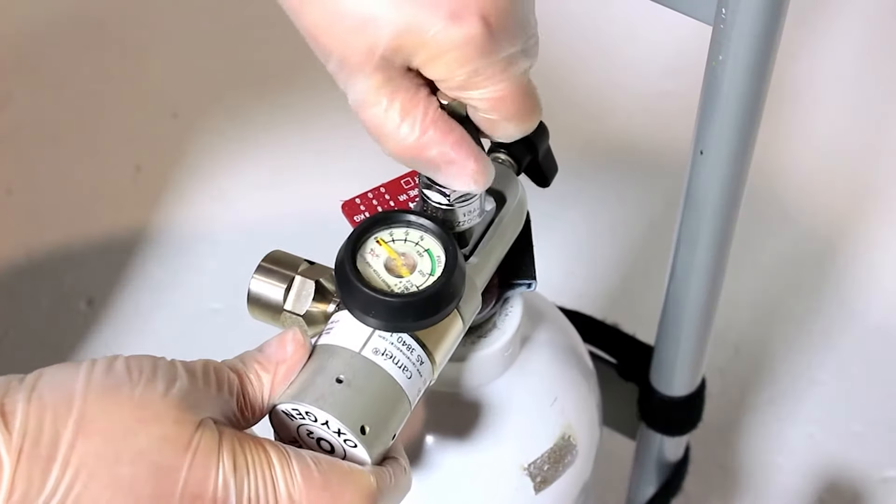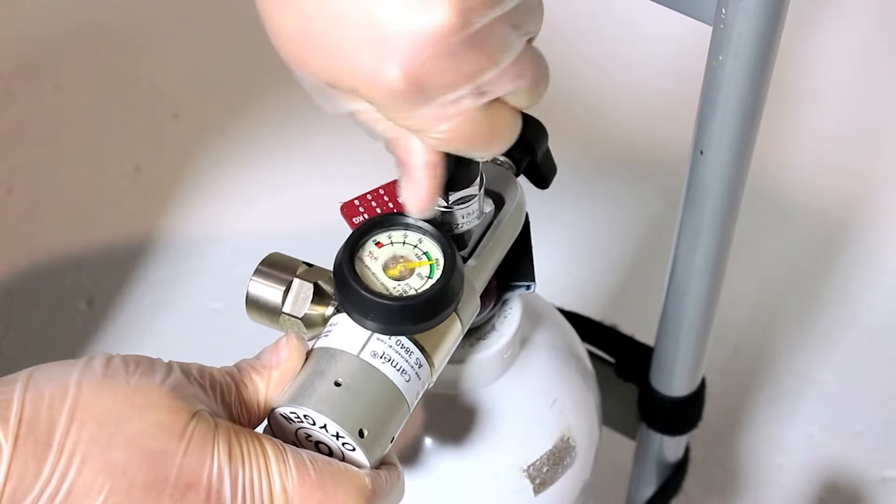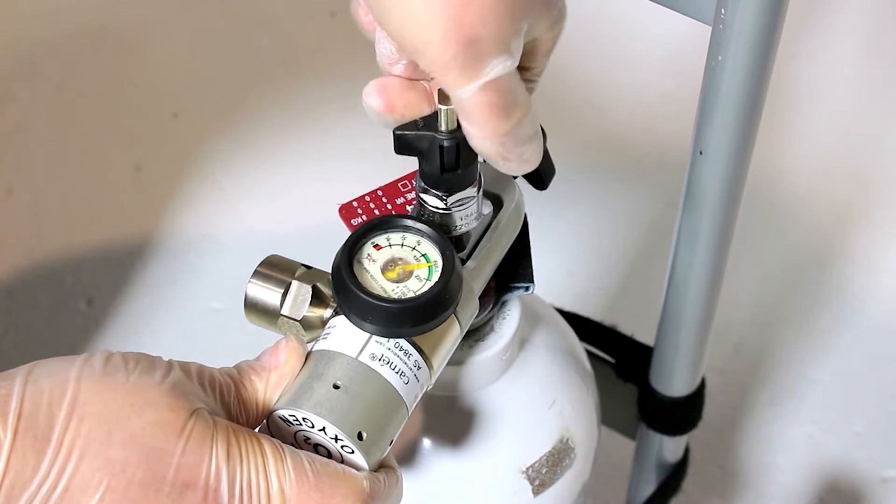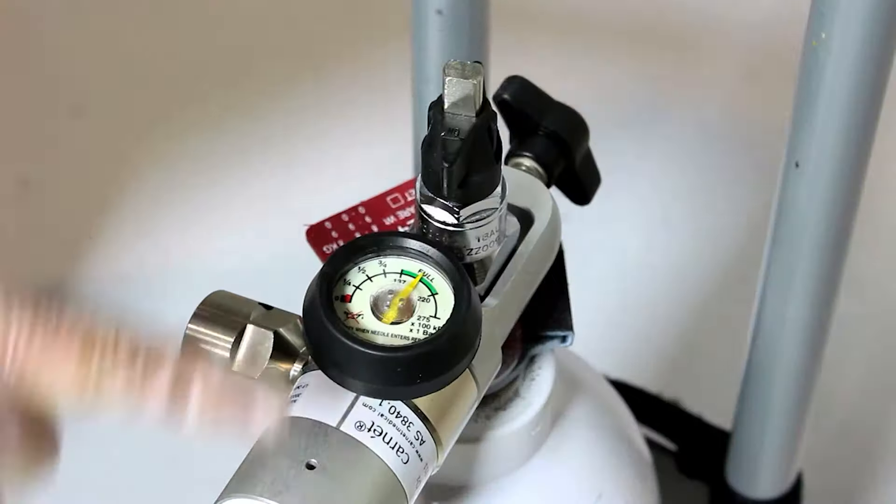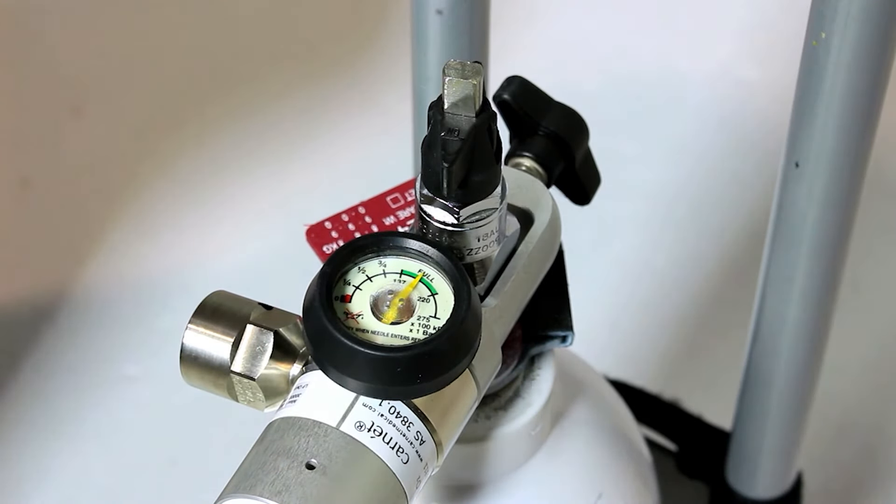To open the cylinder, turn the cylinder handle in an anti-clockwise direction slowly until it stops. Then turn back half a turn so you can easily check if the valve is open. You may hear a hiss as the regulator pressurises. The pressure indicator will show the gas level in the cylinder.